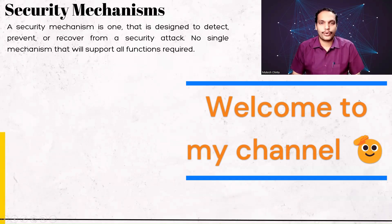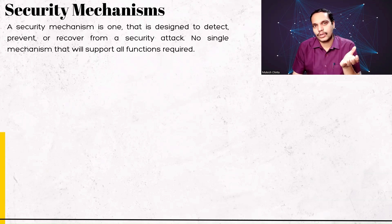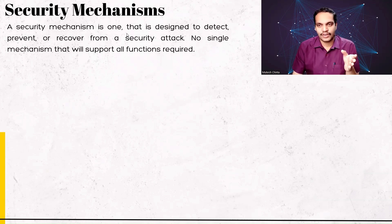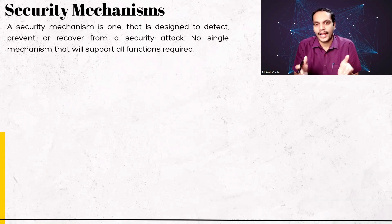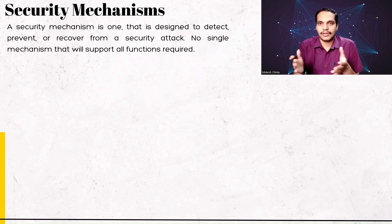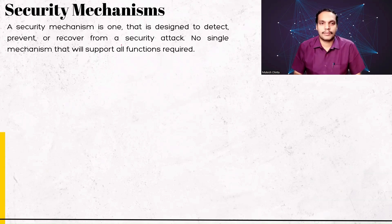Welcome. In this video, I'm going to discuss security mechanisms, one of the concepts mentioned in OSI security architecture. We previously discussed security attacks and security services. Now let's talk about the actual techniques or tools used for implementation of security services to safeguard against attacks. A security mechanism is designed to detect, prevent, or recover from a security attack. It is not just one mechanism used to implement a particular service — usually a combination of many mechanisms is put together for one security service, and one mechanism can be used to implement various security services in combination with others.